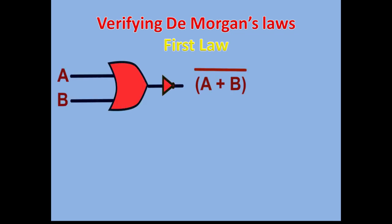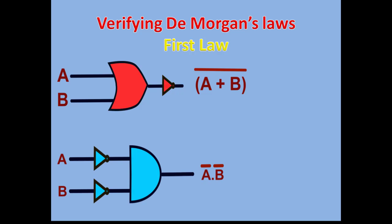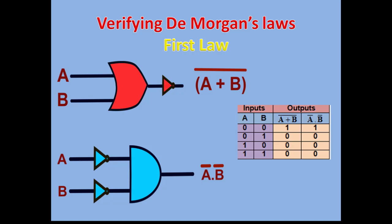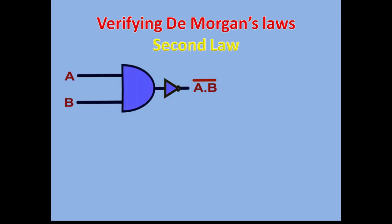In the first part we verify DeMorgan's laws. This is DeMorgan's first law — the left-hand side is A OR B, whole bar, and the right-hand side is A-bar AND B-bar. It's like: break the line and change the sign. When we execute this in SimulIDE, both outputs are the same for every input: for zero-zero both are one, for zero-one both are zero, one-zero both are zero, and one-one both are zero — so they are logically equivalent.